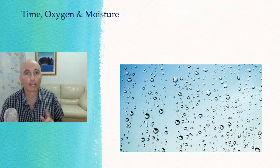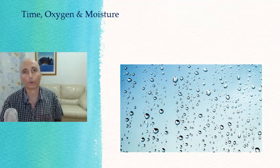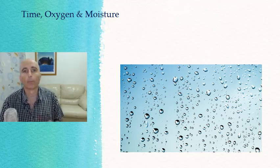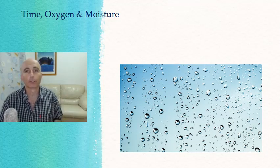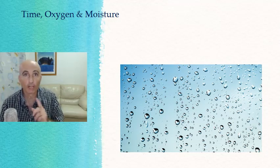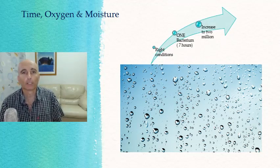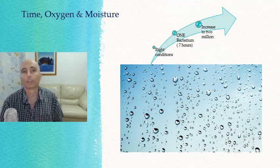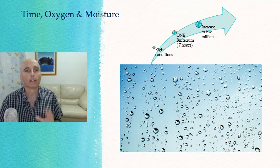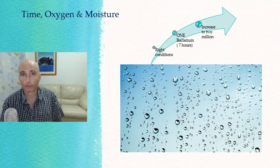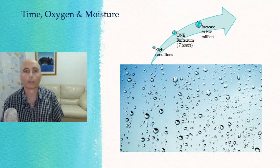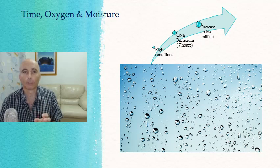Given the right conditions — food, water, a good pH level, time, oxygen, and moisture — bacteria can actually double every 20 minutes. Within seven hours, one bacterium can increase to two million. After three hours and 20 minutes, most bacteria will have reproduced to sufficient levels to cause food poisoning. With oxygen, bacteria that need it to grow are called aerobic, and some bacteria need little or no oxygen, which is anaerobic. Remember that, because we'll talk about it later.